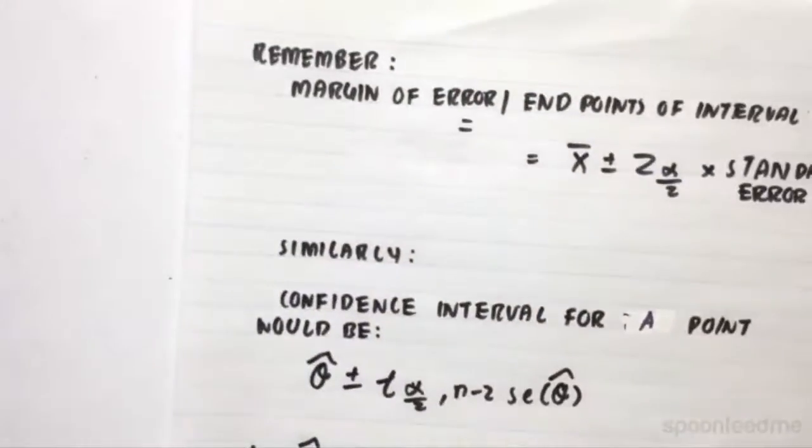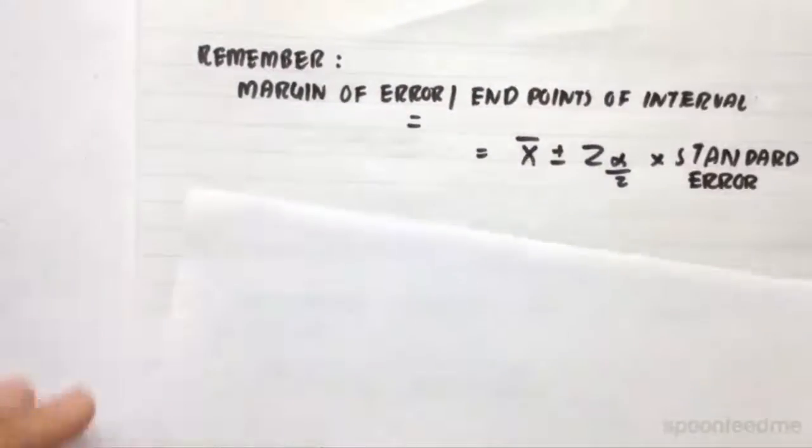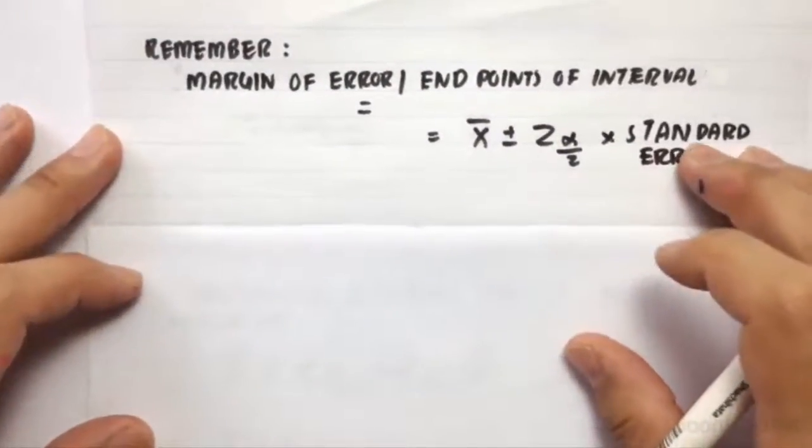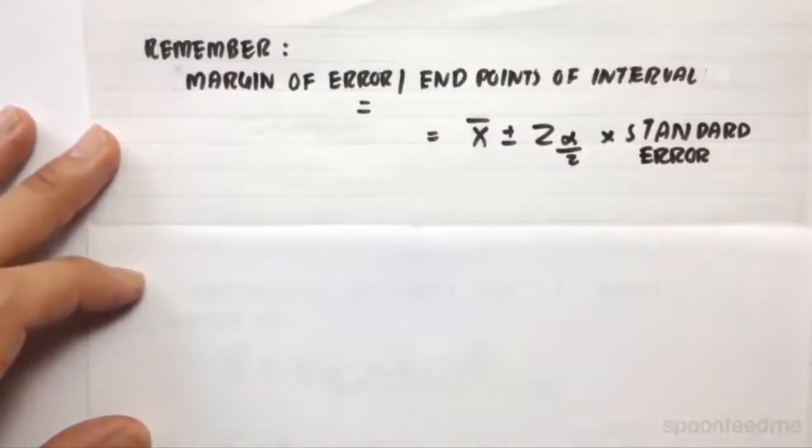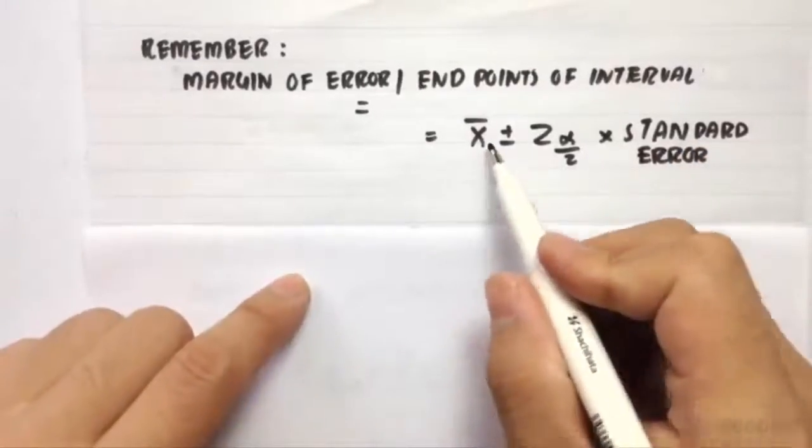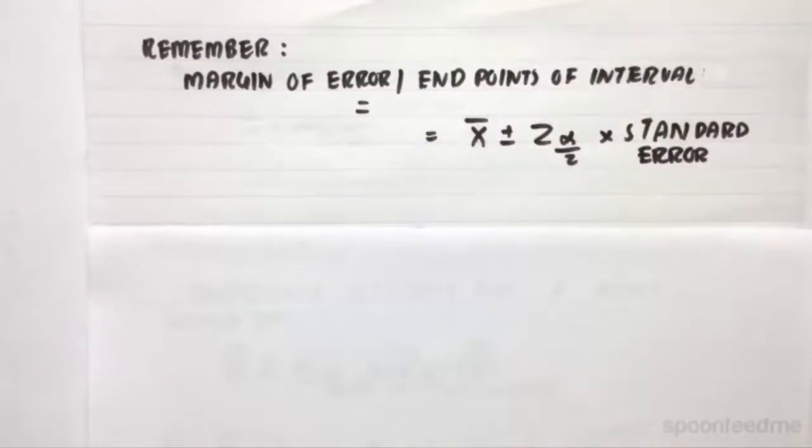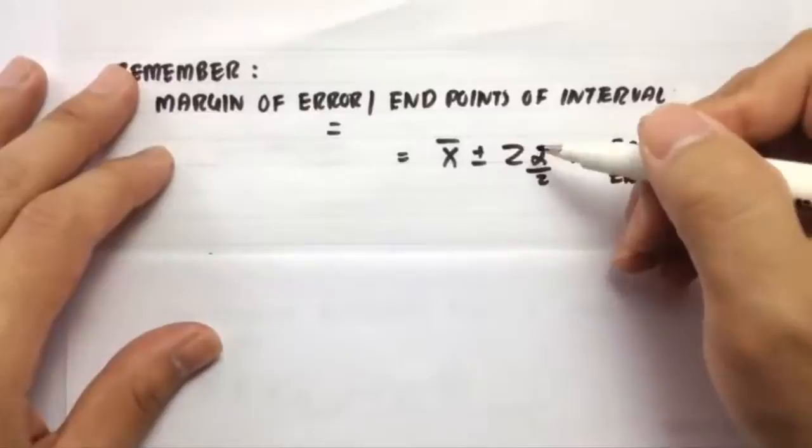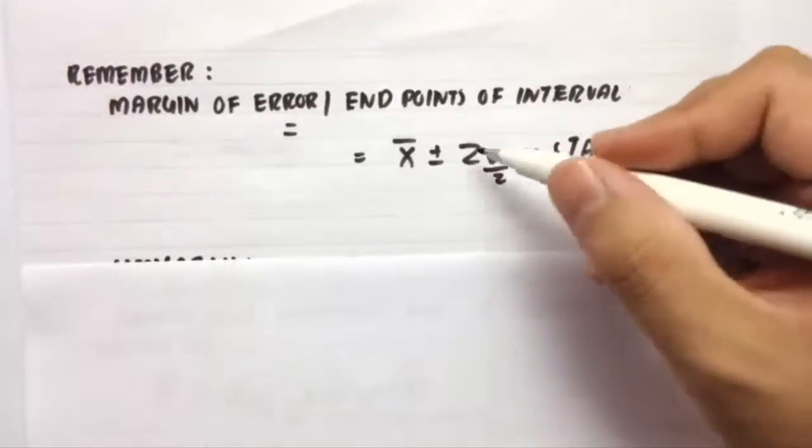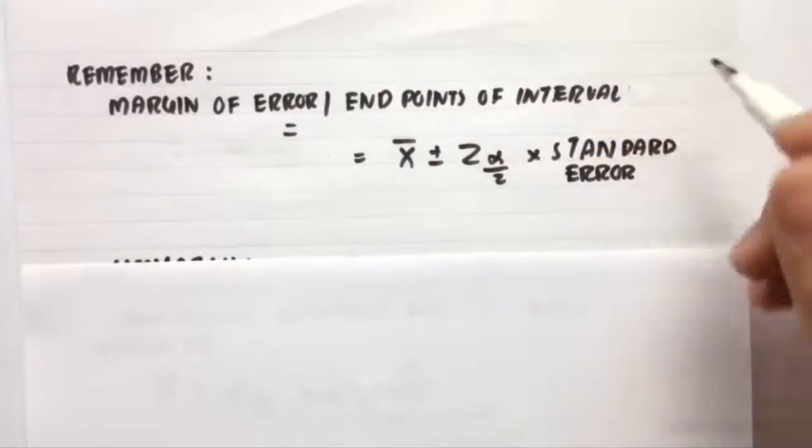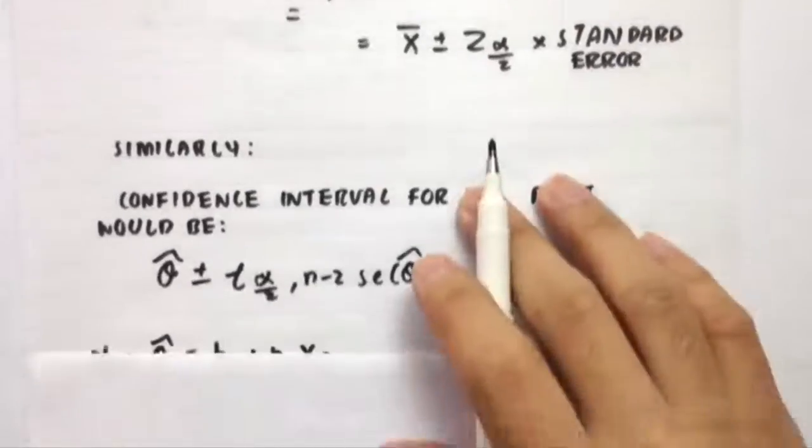So again, confidence interval is very similar to what we did before. So remember, if we have a margin of error, the endpoints of the interval are equal to the sample mean plus or minus, so plus for the upper bounds, minus for the lower bounds, Z alpha over 2 times the standard error.